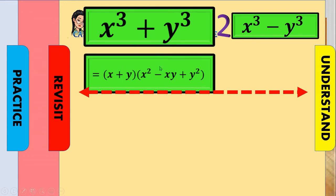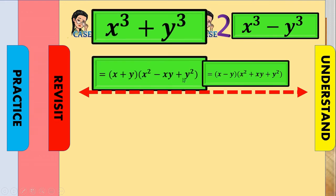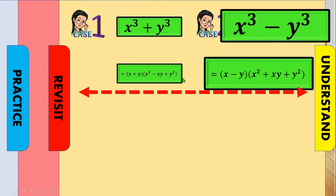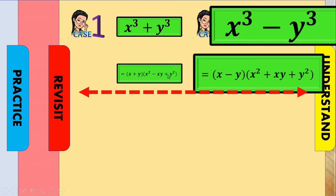Now going to case two: it has the same terms as case one, but the difference is the signs. In case two we have subtraction (same as the given), addition (opposite of the given), and the last sign is always addition — always positive.